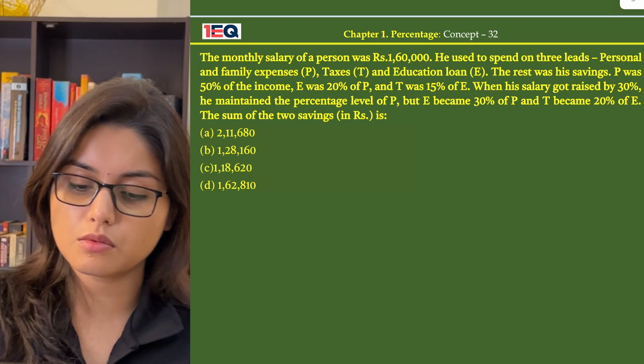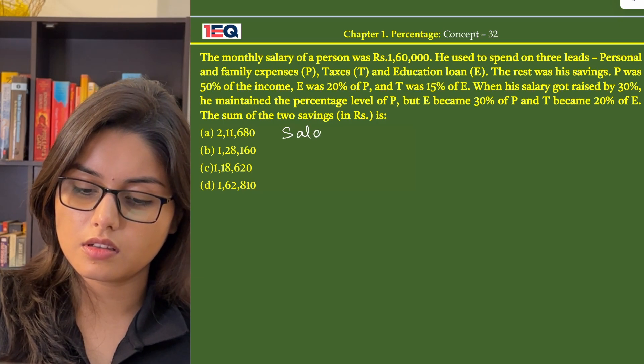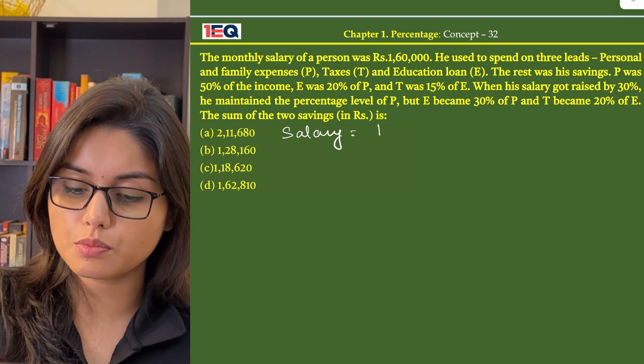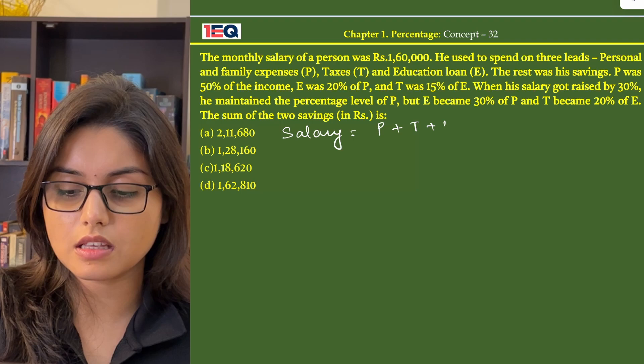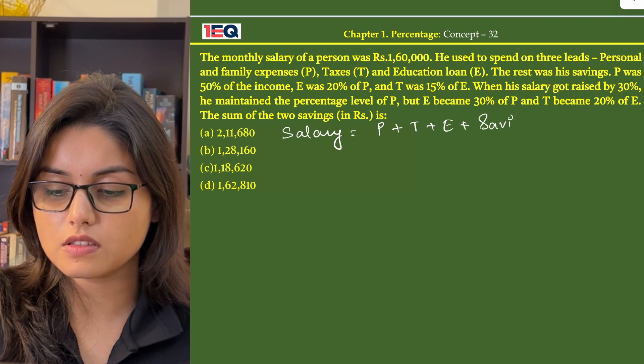That means salary is equal to P plus T plus E and the rest were his savings.